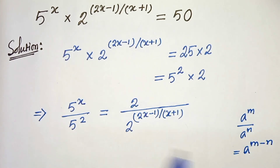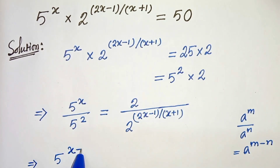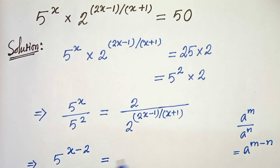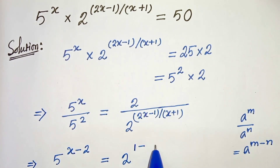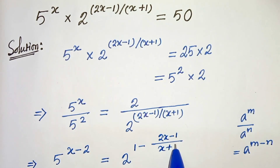Let's apply this here. So we will get 5 to the power (x minus 2), and from this we will get 2 to the power 1 minus (2x minus 1) divided by (x plus 1).